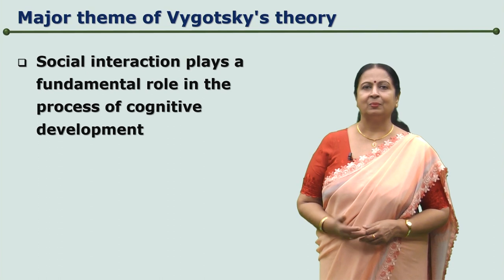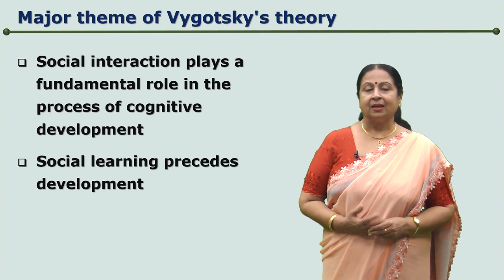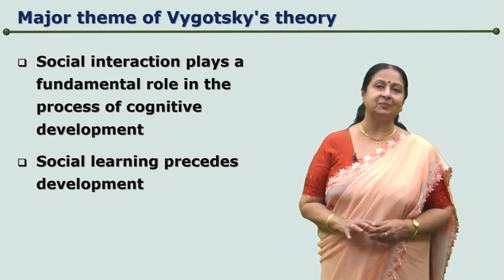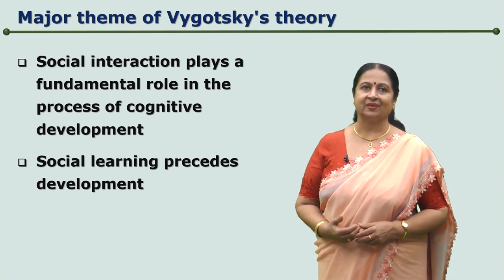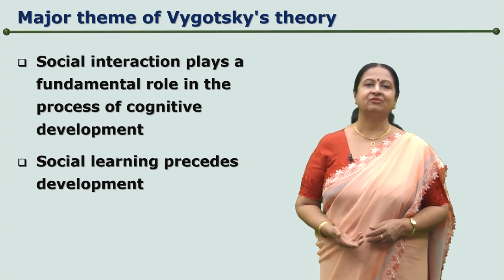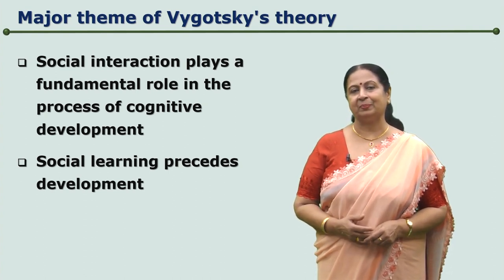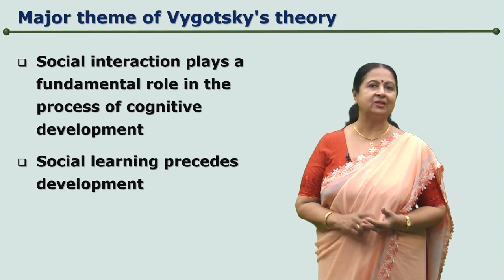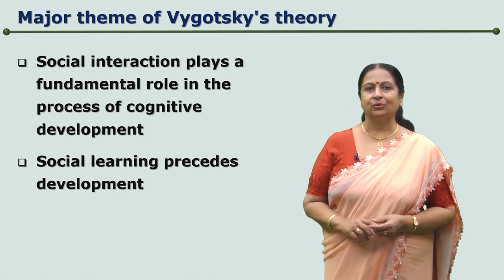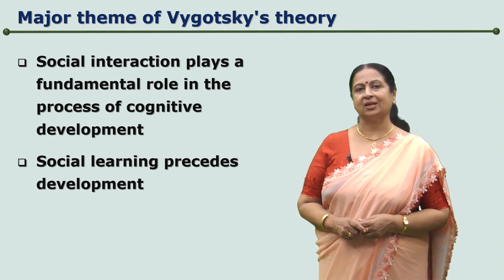Social interaction plays a fundamental role in the process of cognitive development of the child. As the child first observes others, imitates, and then tries to internalize, social learning always precedes individual learning. In other words, social learning precedes development — be it cognitive development, social development, or cultural development. Today we are going to know more about how it happens in Vygotsky's Theory of Social Constructivism.